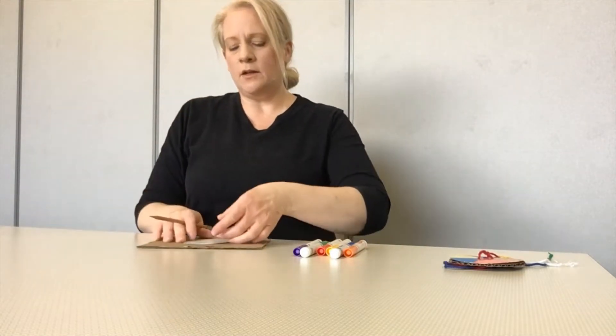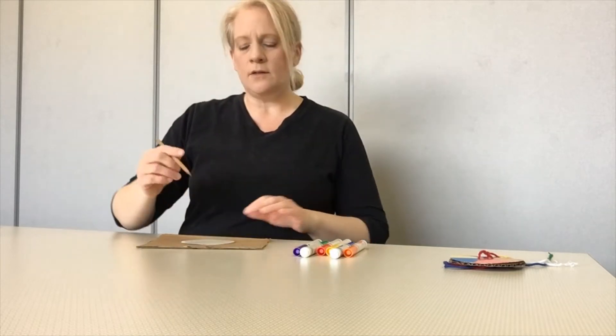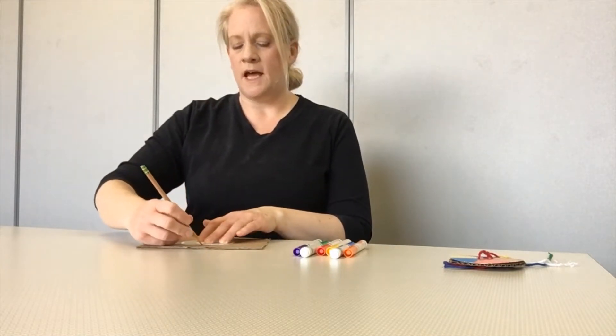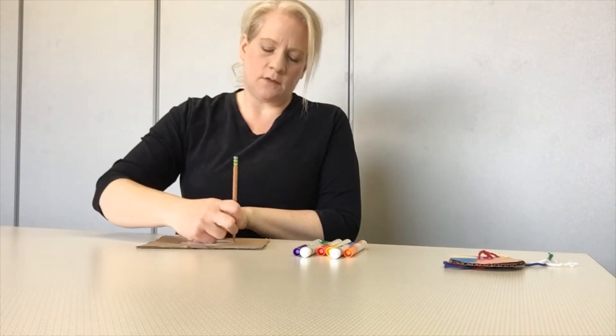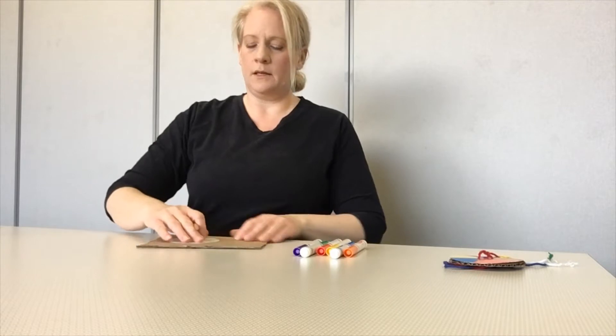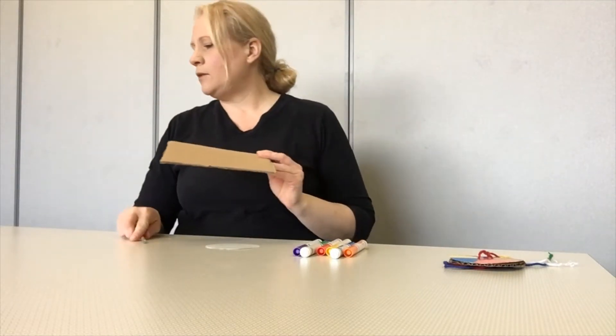We're gonna take our pencil. We are gonna trace our white circle that we just cut out. We're gonna trace that on the cardboard because we want them to be the same size. So go ahead and put your circle on the cardboard. Trace around it. And now you've got a circle on your cardboard the same size. We need to cut that one out too.